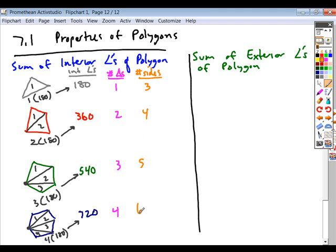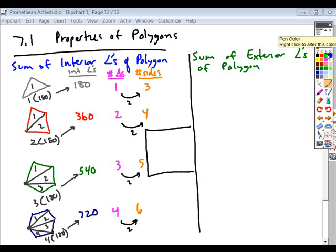Well, what is the difference between each of these? Each one has a difference of two, right? So to go from the number of sides to the number of triangles formed, you simply take the number of sides minus two. And so that gives you your sum of interior angles. If you just take n minus two times 180, you get your sum of interior angles.